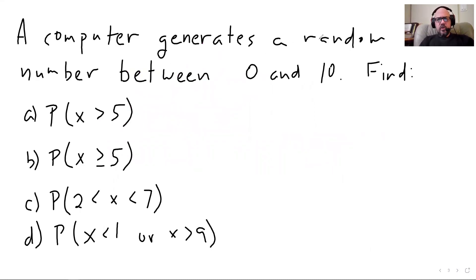I've got a computer generating a random number between 0 and 10. I want to find the probability that X is greater than 5, probability that X is greater than or equal to 5, and these other probabilities. I'm going to find them by shading on a graph. That is going to be a recurring theme in this course.